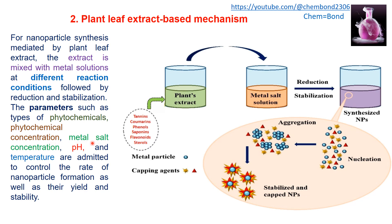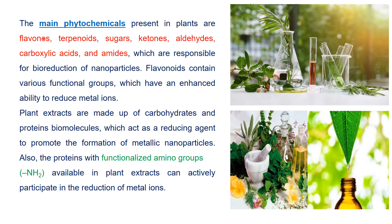Parameters such as types of phytochemicals, phytochemical concentration, metal salt concentrations, pH, and temperature are important to control the rate of nanoparticle formation as well as their yield and stability. The main phytochemicals present in plants are flavonoids, terpenoids, sugars, ketones, aldehydes, carboxylic acids, and amides, which are responsible for bioreduction of nanoparticles.